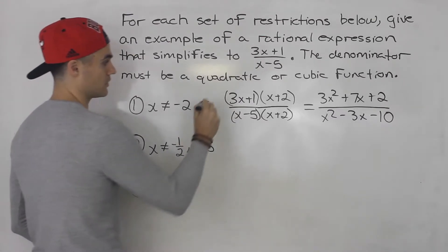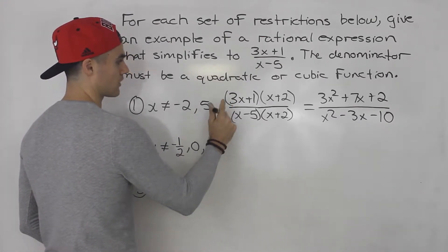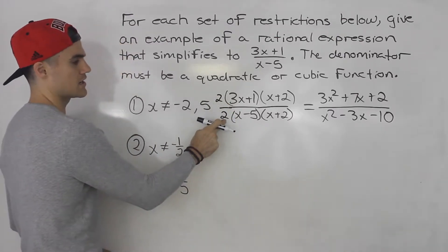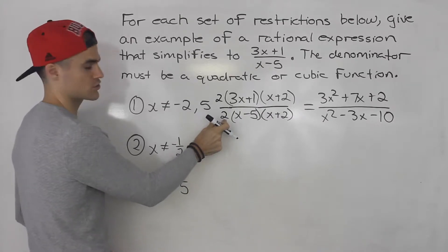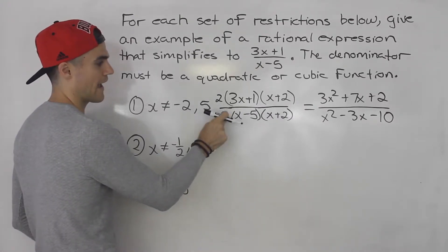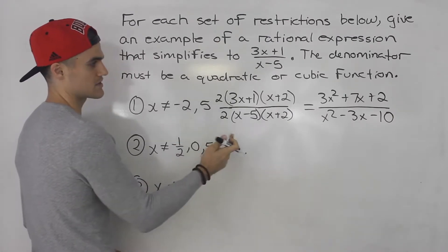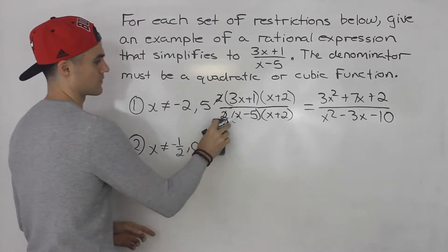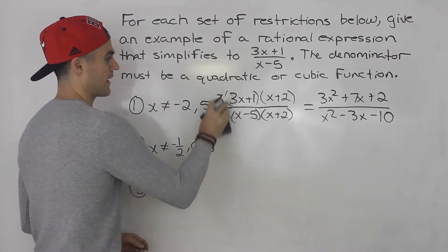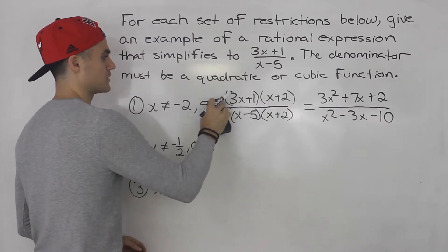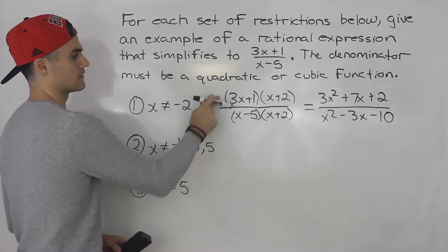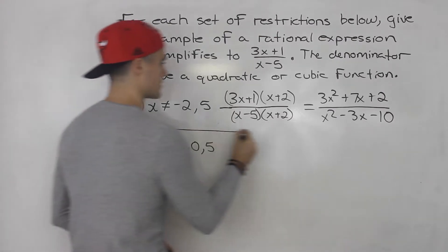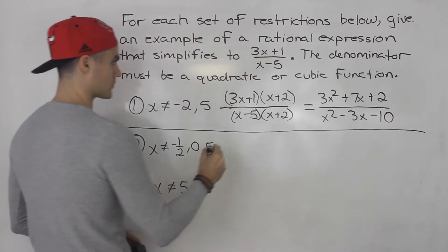If you want another example, you could put any number in front of both — say a 2 in the numerator and a 2 in the denominator — because a constant doesn't affect the restrictions; there's no extra x variable. You just multiply everything by 2 and the 2s cancel out. Usually if they don't ask for two examples, I try to keep it as lean as possible. That's number 1. What about number 2?